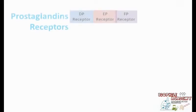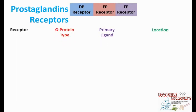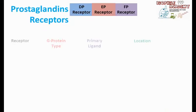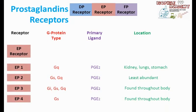Now let's move to prostaglandin receptors. There are mainly three receptors: DP receptor, EP receptor, and FP receptor. The DP receptor is of Gs and Gq type, and the primary ligand which attaches to it is PGD2. This receptor is located in the CNS, eosinophils, and T cells. Its pharmacological effects are dilation of blood vessels, smooth muscle relaxation, and inhibition of platelet aggregation.